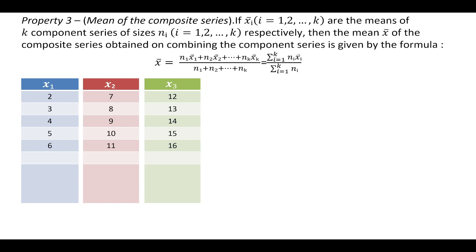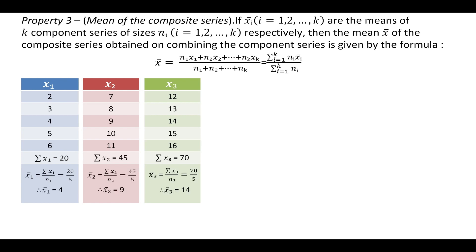For better understanding we will first verify the property numerically before understanding the proof theoretically. Suppose we consider three series x1, x2, and x3, where Σx1 = 20, Σx2 = 45, and Σx3 = 70. The arithmetic mean of each series is x̄1 = 4, x̄2 = 9, and x̄3 = 14.